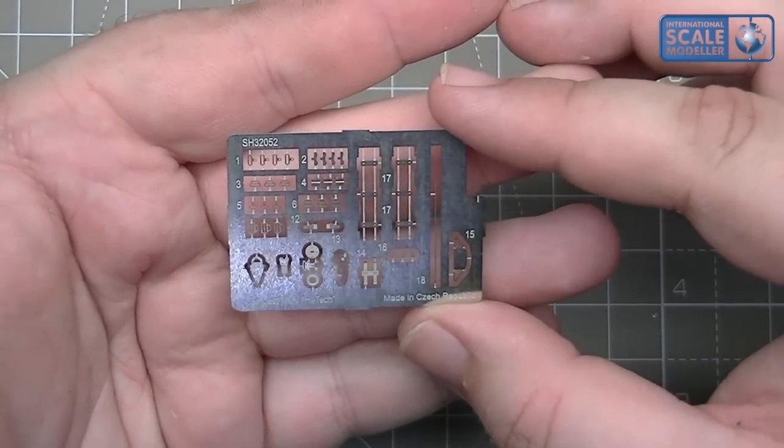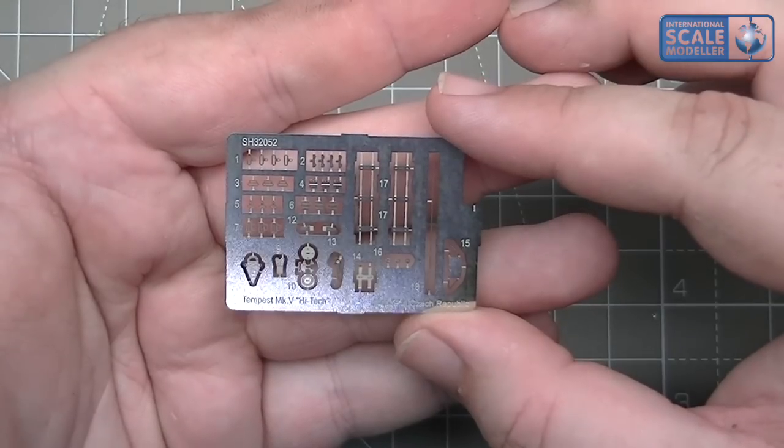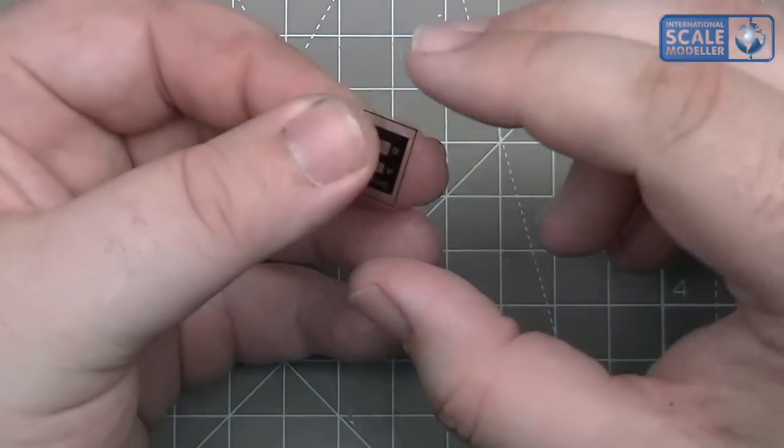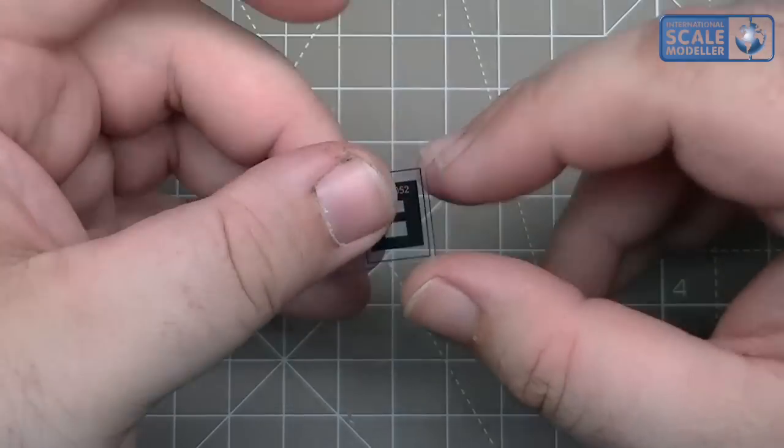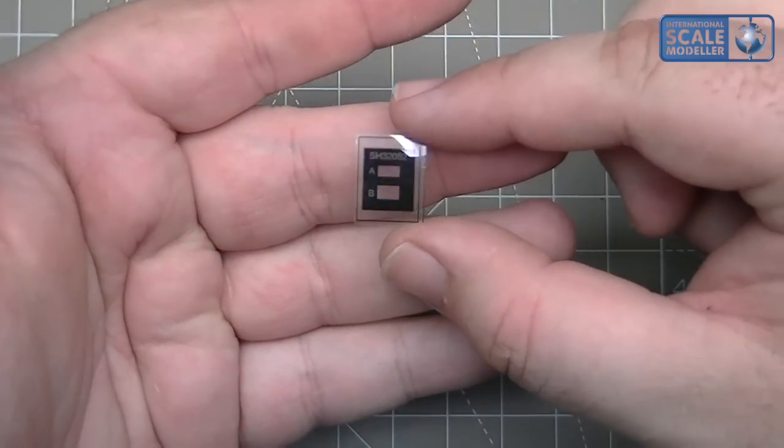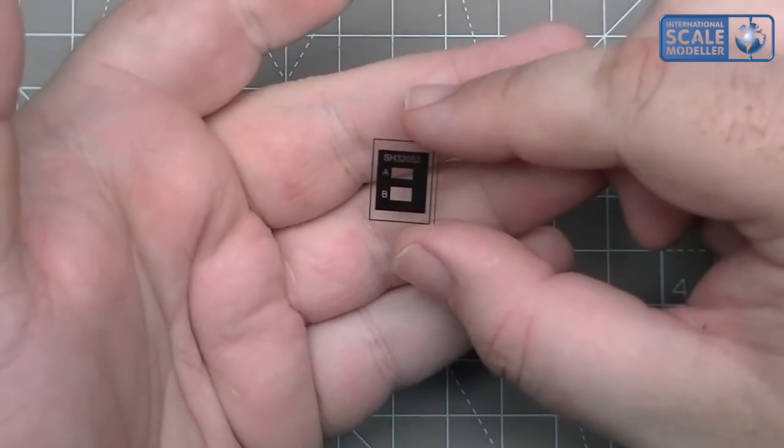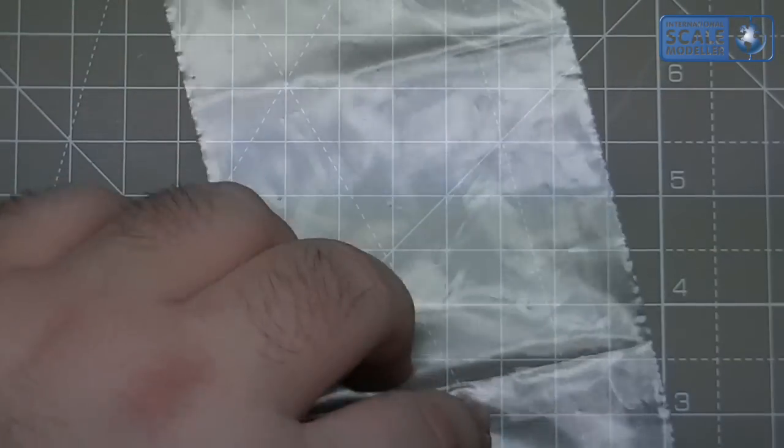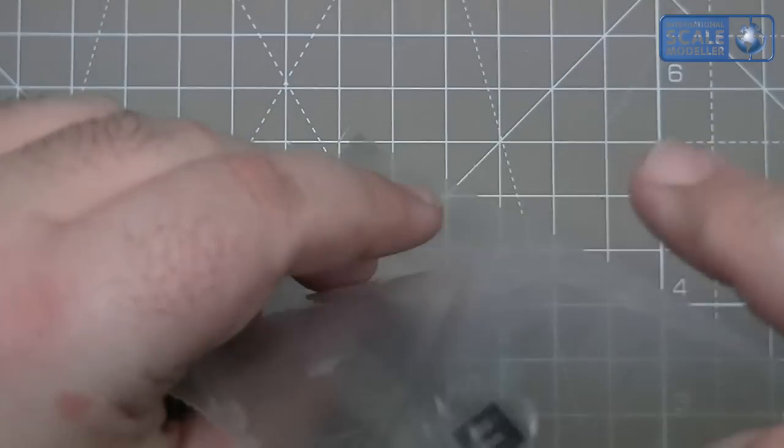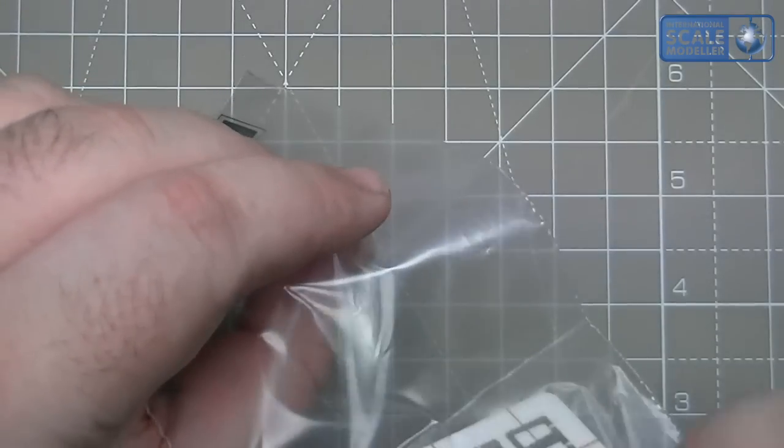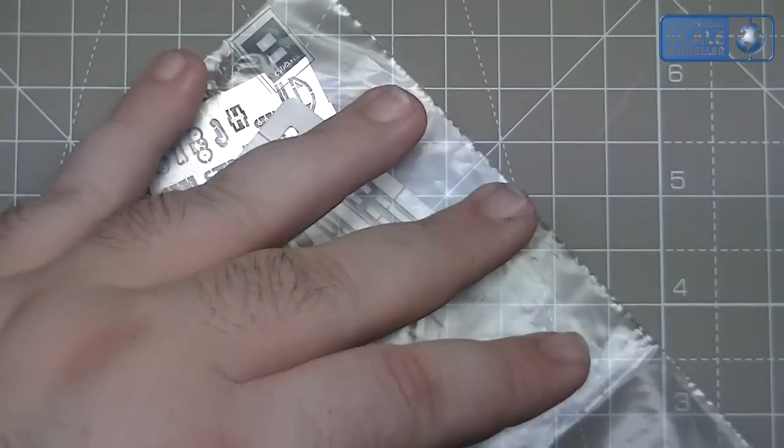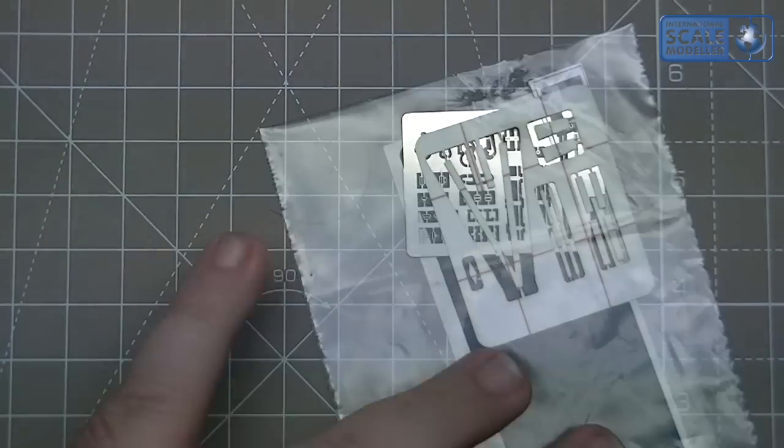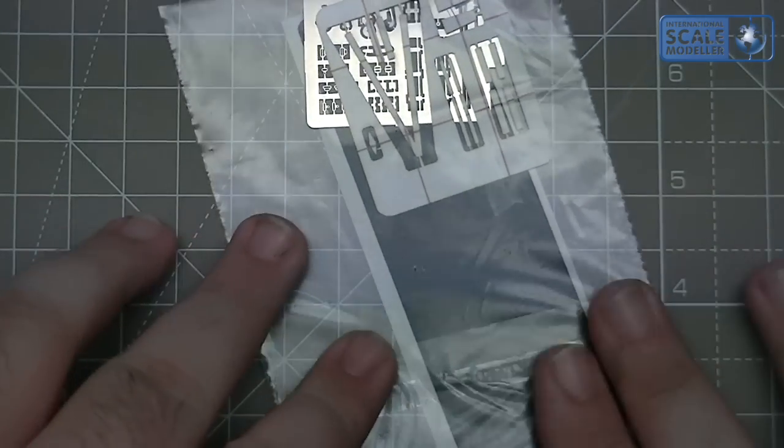We've got the mask set for the wheels, front screen, rear canopy, and obviously all the different lights. These are vinyl, a couple of different sizes there. It's a nice addition, saves a lot of time. You've got the HGW belts which are lovely, and the seat belt PE as well for everything - all the clasps, buckles, other bits and bobs for the aircraft itself.